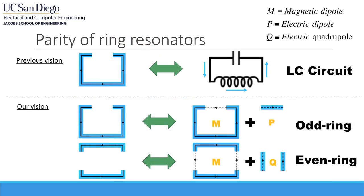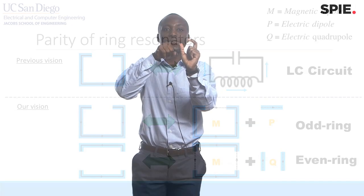The whole field of metamaterials started with the discovery of what is called the split-ring resonator. The split-ring resonator is basically a ring made of a metallic particle. All metamaterials proposed afterwards, especially negative metamaterials, were based on some kind of modification of that split-ring resonator.